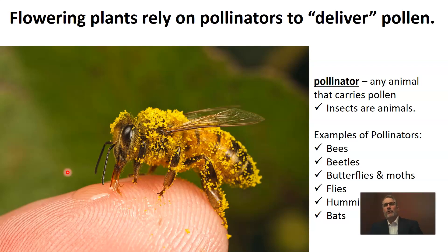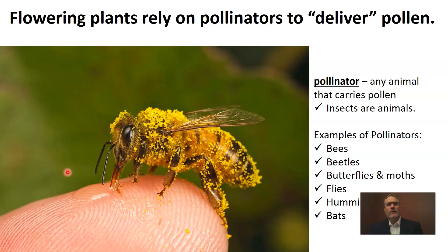Some examples of pollinators would be bees — whether honeybees or bumblebees — wasps, which are similar to bees but not the same, beetles, butterflies and moths, and flies. There are many different species of flies that are very important pollinators. This also includes birds like hummingbirds, which some of you may have seen visiting flowers. And mammals too — bats are actually very important pollinators. If you enjoy bananas, bananas are often produced because bats provide pollination services for them.